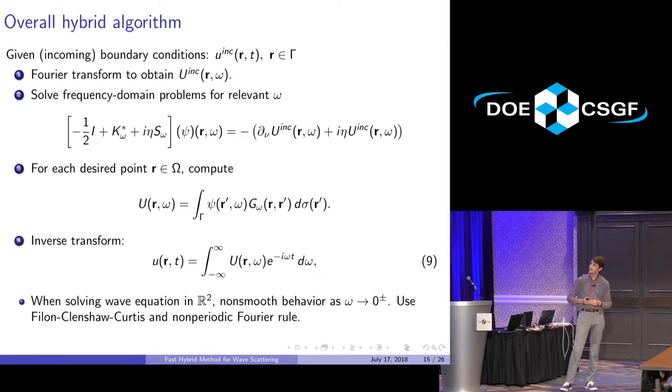I can summarize with the overall hybrid algorithm, which produces the solution u for an incident field u^inc, solves frequency domain problems for relevant frequencies, computes the frequency domain solutions, and then inverse transforms to find the time domain solution. There's some subtleties in 2D, which I don't want to get into. You have to use some singular quadrature rules near omega equal to 0, and that's not a big deal.